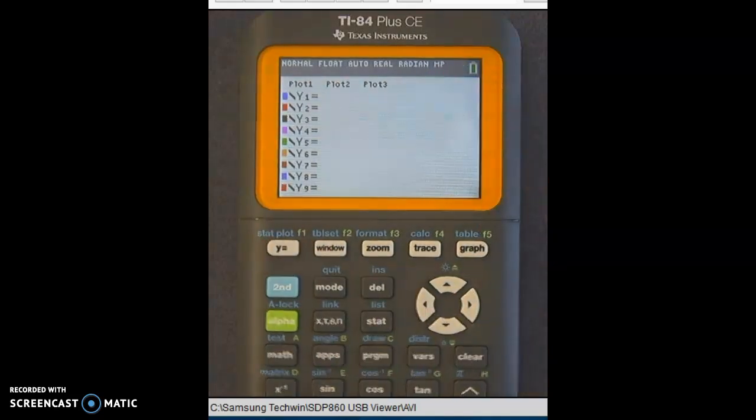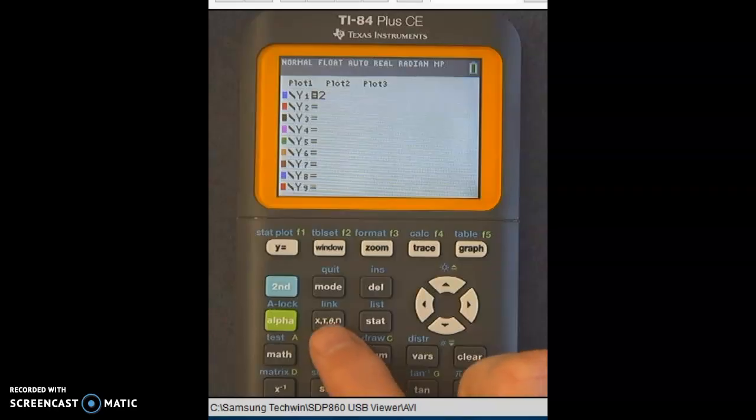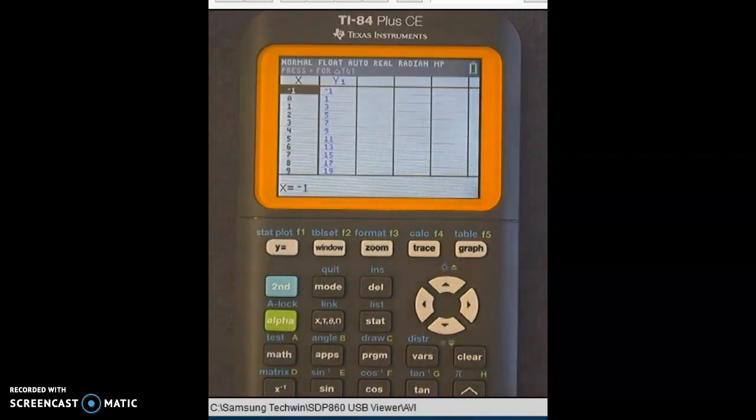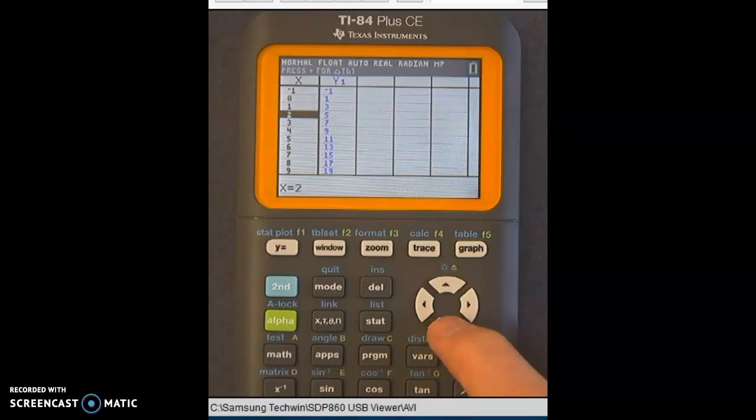So Y equals, type in your equation. Remember, the X button is right here. So if you need to do X, it's next to the alpha key. You type it in. If you want to go right to the table, you hit second, graph, and it'll bring you to the table. You can scroll up and down using those left and right arrows. And I think you would be pretty good for that.